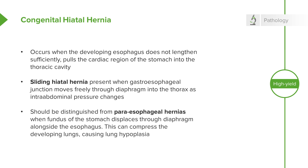It is important to distinguish congenital hiatal hernias and sliding hiatal hernias from a paraesophageal hernia. In this case the esophagus travels into the abdomen normally and does not slide in and out, but rather there's a weak spot nearby that allows a portion of the stomach — likely the fundus — to herniate through alongside the esophagus. This can occur congenitally and if so can compress the lungs, causing lung hypoplasia and not allowing them to fill completely or develop normally.